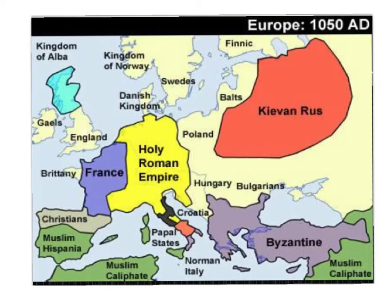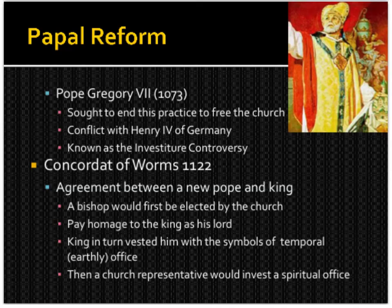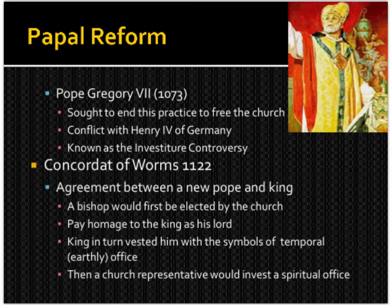Looking at the map again, let's remind ourselves where the Papal States are — here they are in central Italy. Pope Gregory VII in 1073 sought to end lay investiture and free the church, leading to a conflict with Henry IV of Germany known as the investiture controversy. There was no agreement until 1122 at the Concordat of Worms, between a new pope and a new king. The agreement was that a bishop would first be elected by the church, pay homage to the king as his lord, and then the king would vest him with symbols of temporal office, while a church representative would invest him with spiritual office.